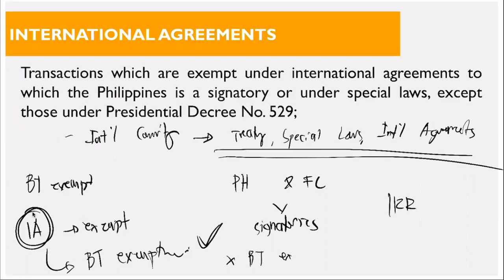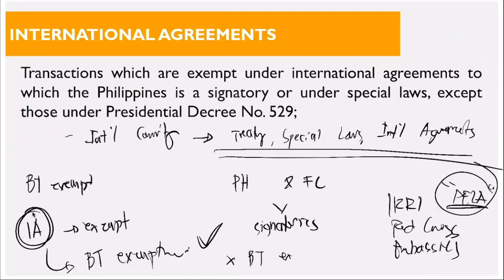Examples of international agreement exemptions include: PEZA (Philippine Economic Zone Authority) transactions — if you are in an eco zone, you are generally not subject to business tax; Red Cross transactions; and embassy transactions. These fall under international agreements or special laws. The key is that the specific agreement or special law must provide for the exemption of business transactions.